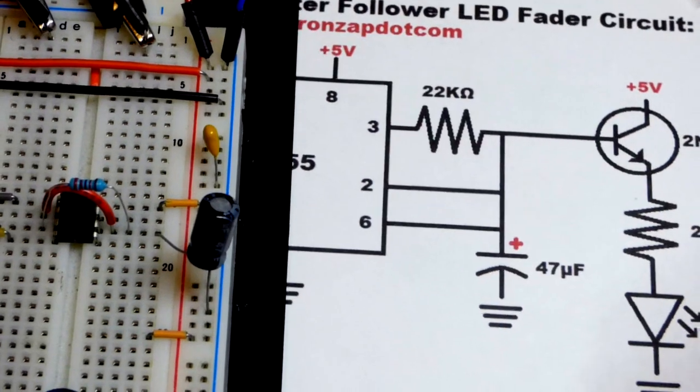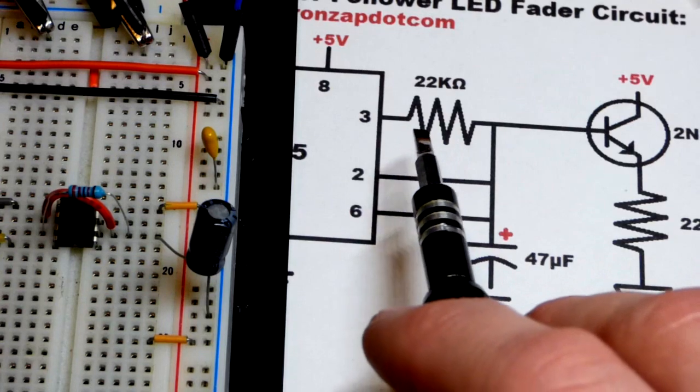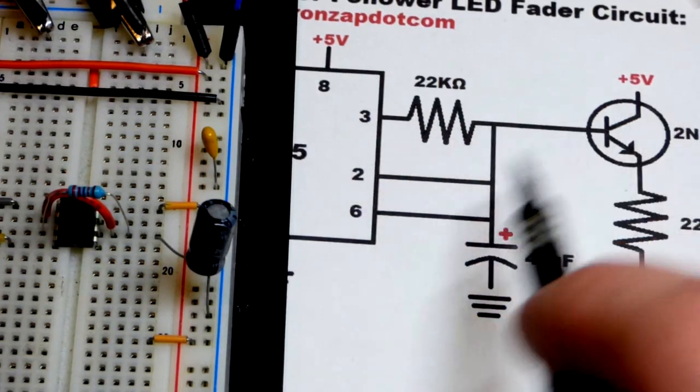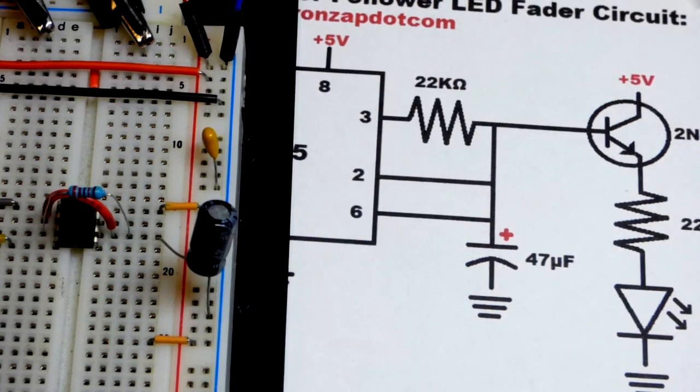I find with a 10 microfarad capacitor and then using about a 100 kilohm resistor, we get the same timing, other than the load takes too much current so the capacitor can't charge up enough.